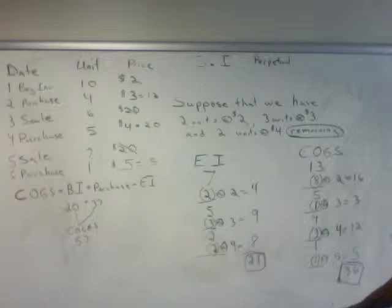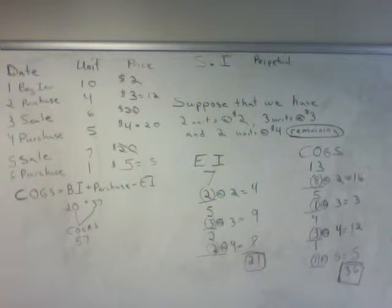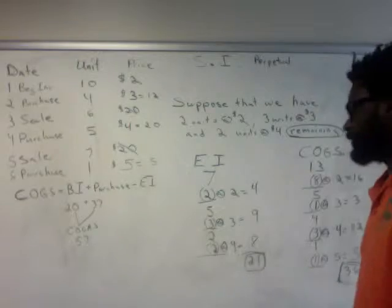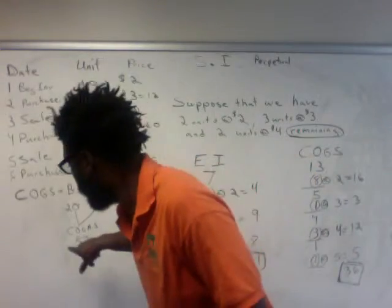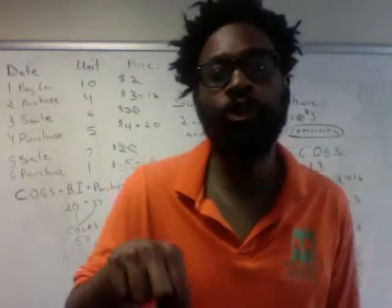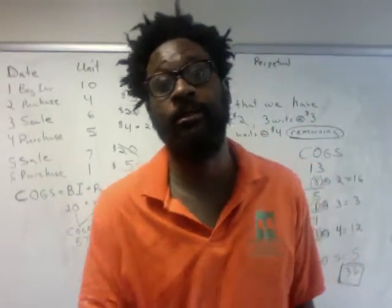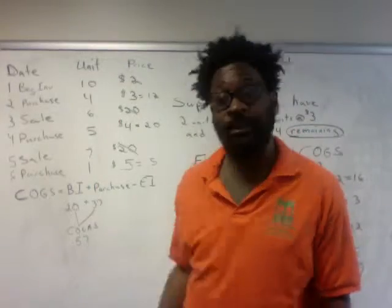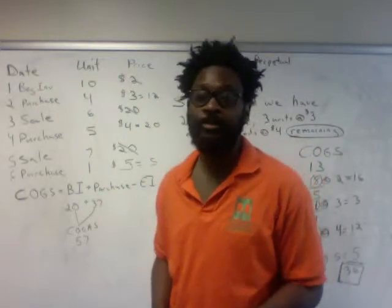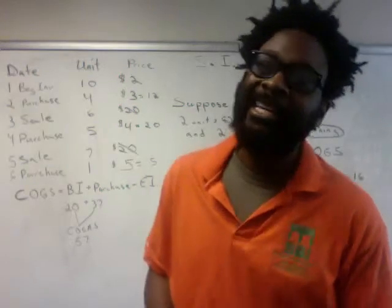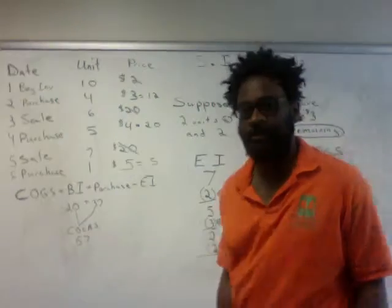For specific identification, ending inventory was $21 and cost of goods sold was $36 — add them together and you get $57. You should be able to do that for every inventory method and get back to $57, except for average cost where rounding may cause a slight difference, but it will be very close.